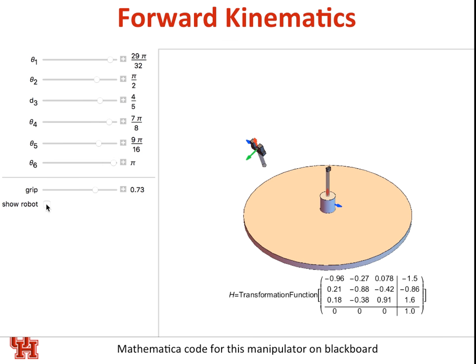But the inverse kinematics problem is when I don't tell you where all the joints are. I just tell you where I want that end effector. So somebody says, the end effector is right here. Tell me what values I should set theta-1 through 6 at in order to get the robot to join up with that.